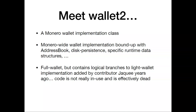Wallet2 is a Monero wallet implementation class used by virtually every Monero wallet out there, except for MyMonero. It contains all sorts of stuff it shouldn't necessarily contain, or for which there should be a separate implementation: address book, persistence, very specific runtime structures. It's a full wallet, but it also contains logical branches to light wallet code written by another contributor quite a while ago. That code is not really in use by anyone, because there's an assertion in that code that has the inverse logical condition it should. If anyone were running that code, it would be crashing. So basically no one's really even maintaining it — there's all this dead code in wallet2.